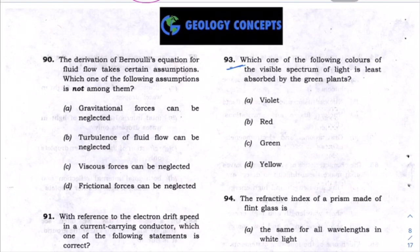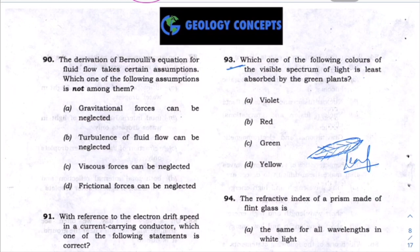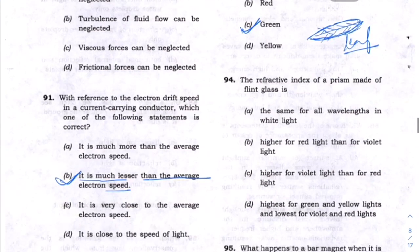Which color of the visible spectrum is least absorbed by plants? When sunlight hits a leaf, the plant absorbs most colors but reflects some. Green leaves appear green to us because green light is reflected by the leaves. If green light is reflected, it means green is the color absorbed the least — so green is the answer.